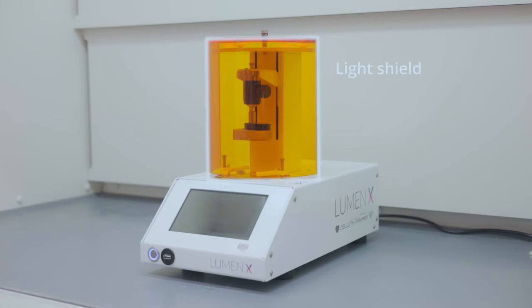This is the light shield. Please keep it closed while printing. This is the build platform. It measures 65 by 40 millimeters, and objects can be printed up to 50 millimeters tall.